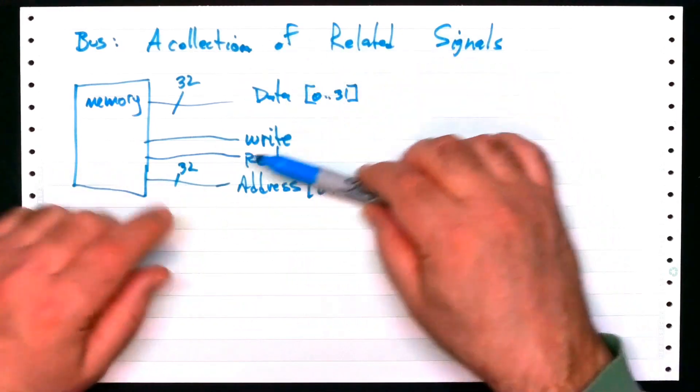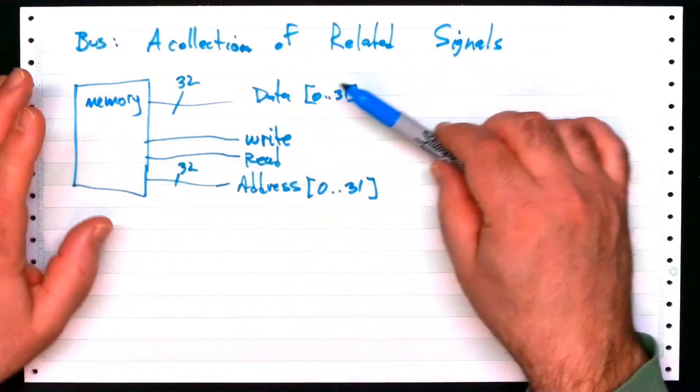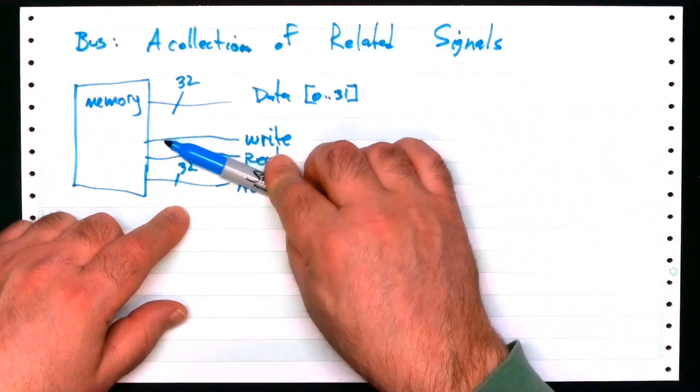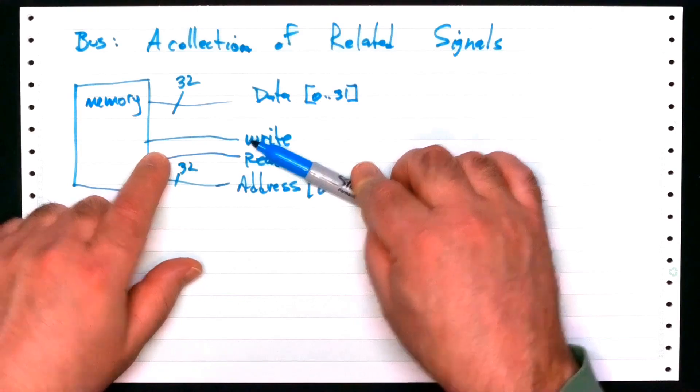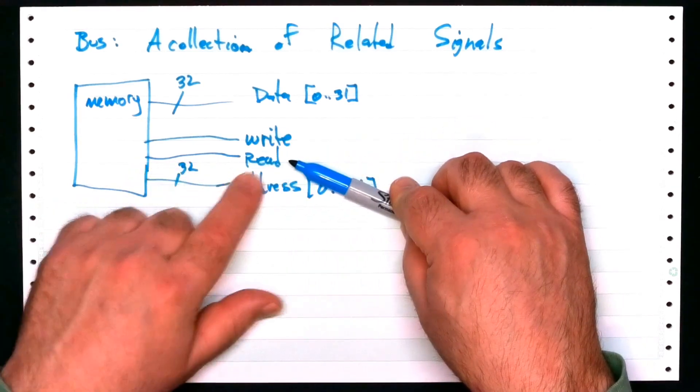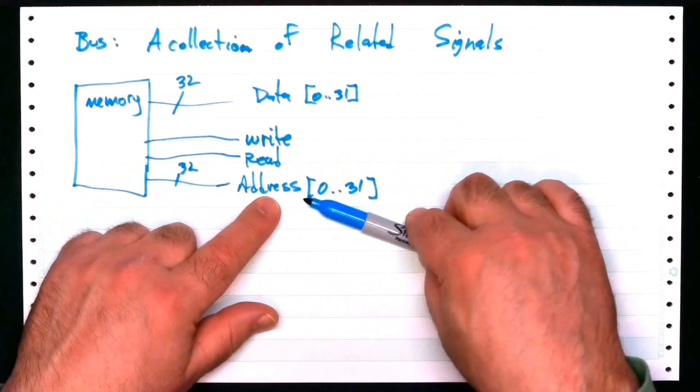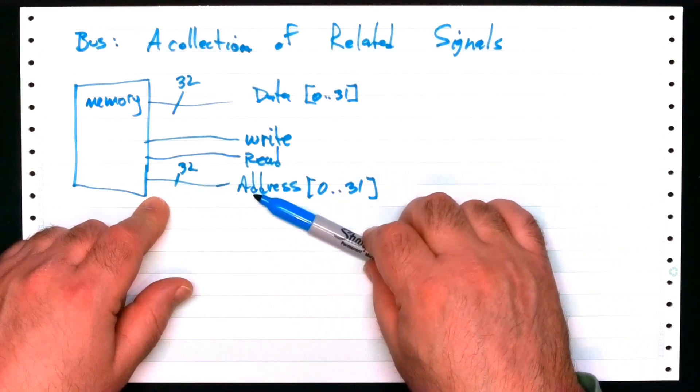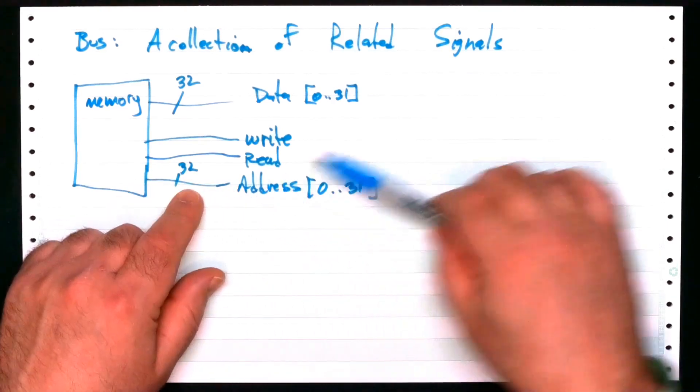And in any kind of documentation, as I've drawn it here, this is incredibly standard and the default way that everyone does this. A signal called write is a single bit, read is a single bit. This signal called address is a collection of 32 bits worth of information. There'd be 32 physical wires here.